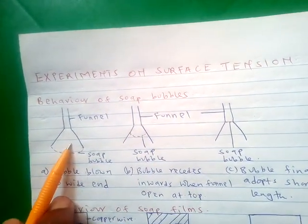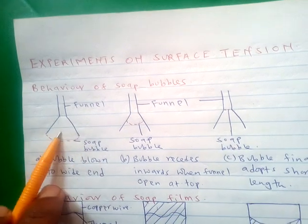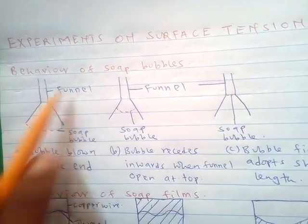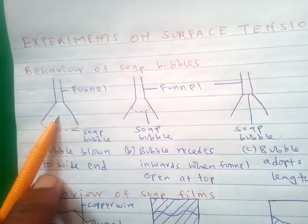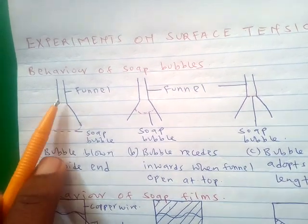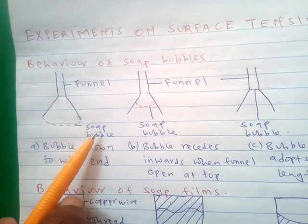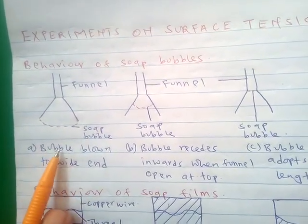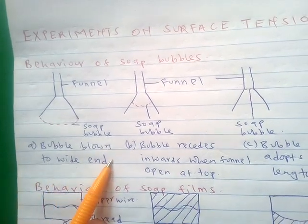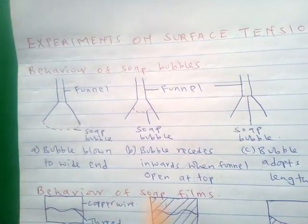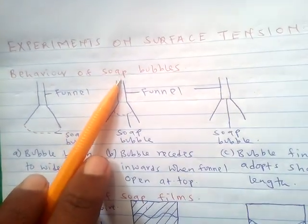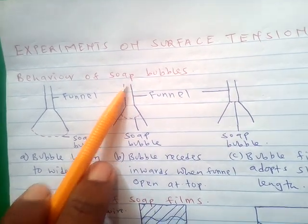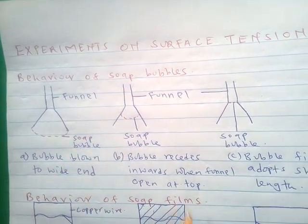In this experiment, a soap bubble is placed at one end of a funnel. It is blown such that the soap bubble assumes a wide shape — the bubble is blown to the wide end of the funnel.